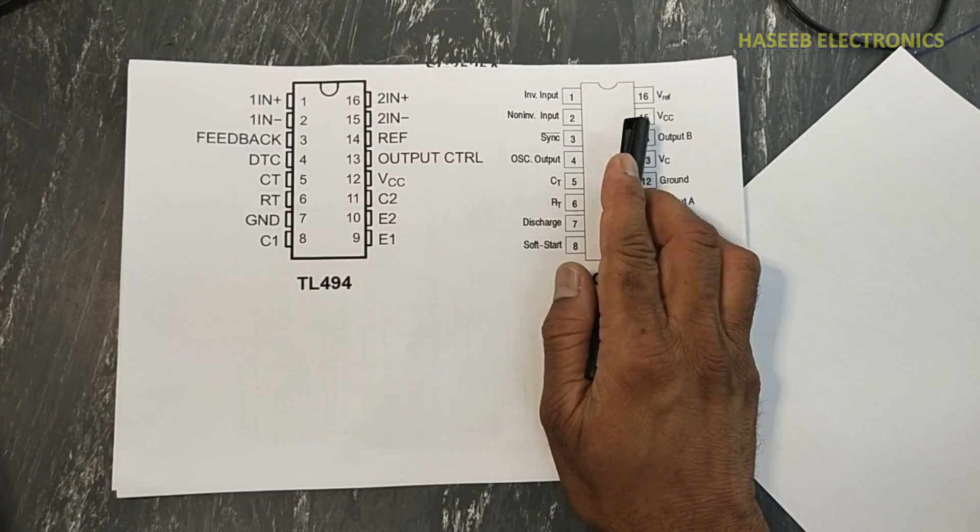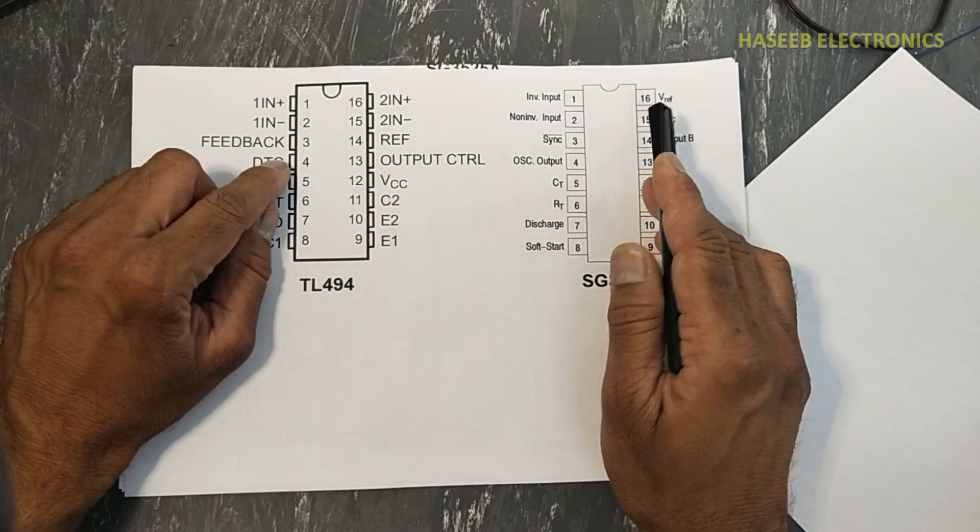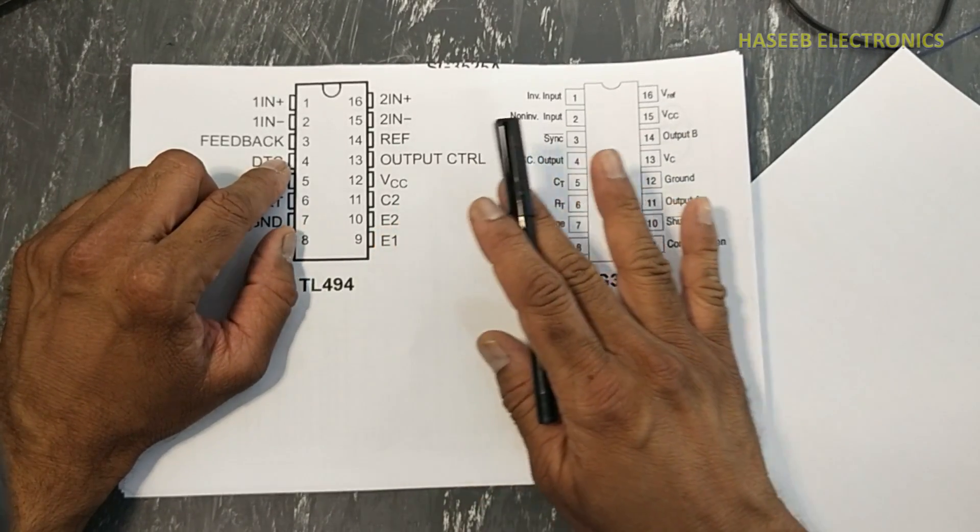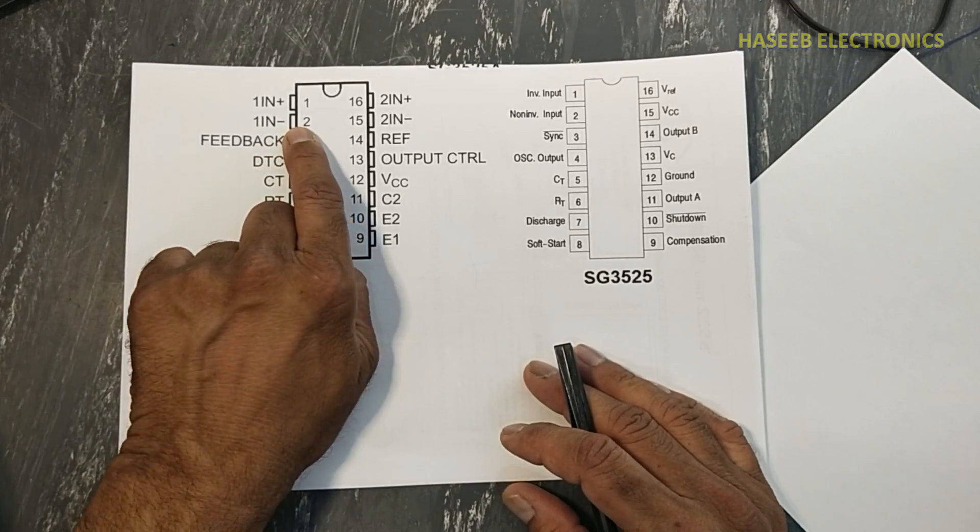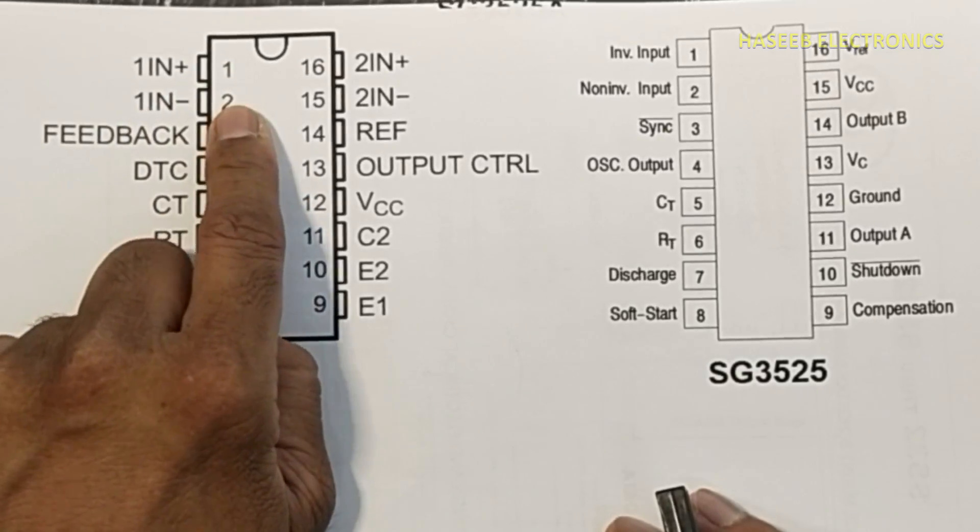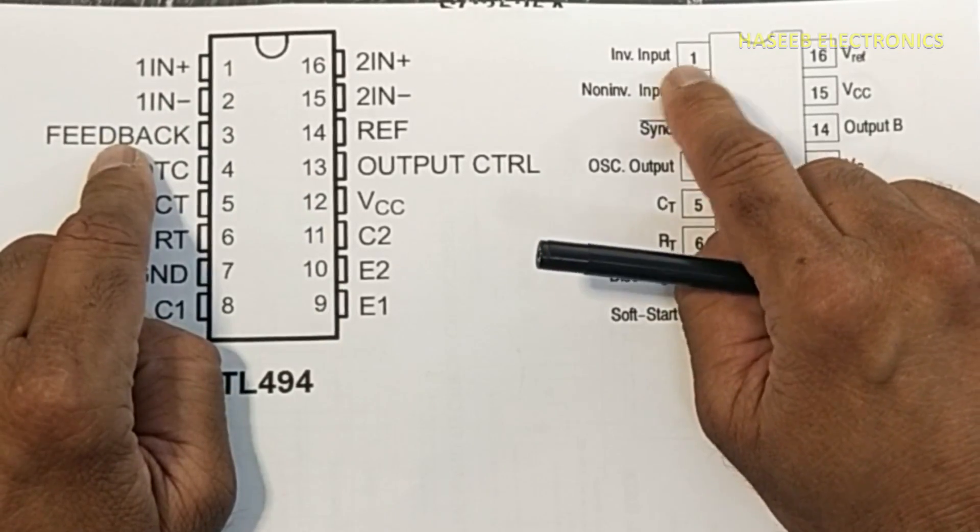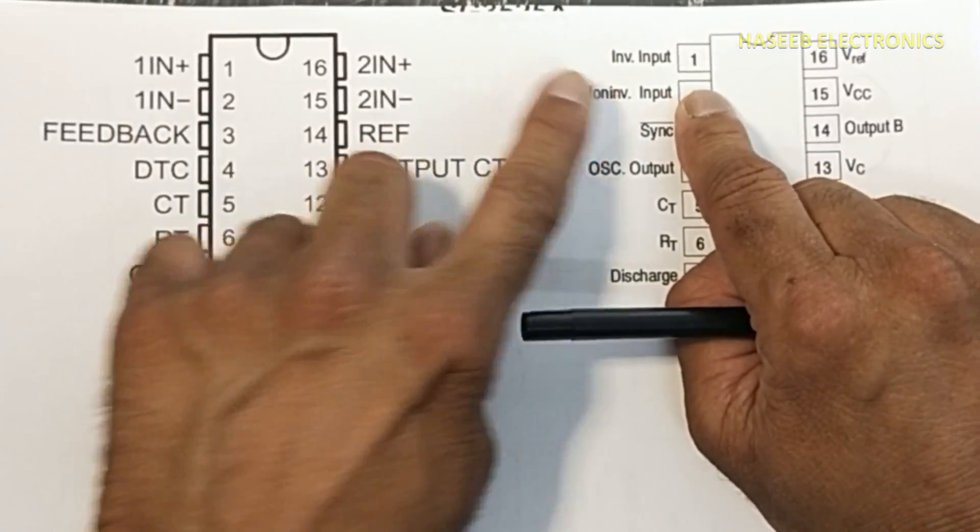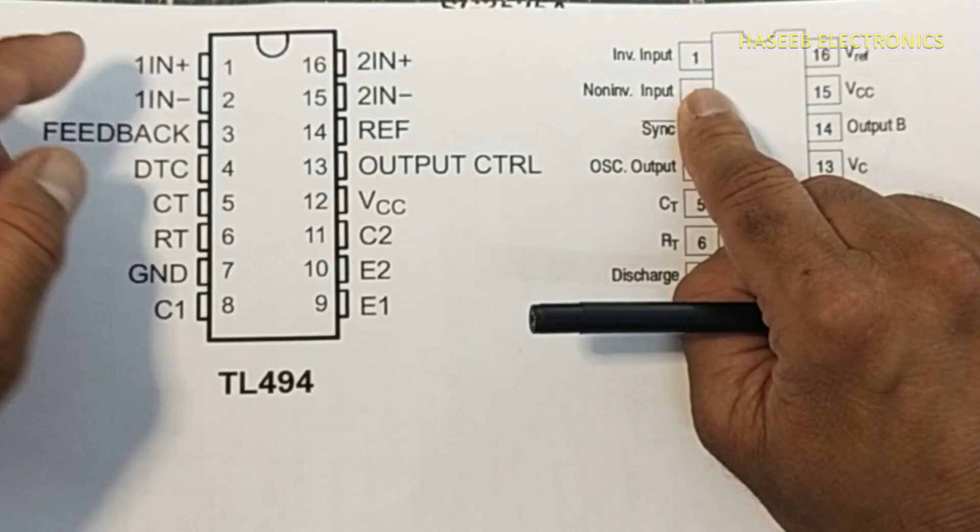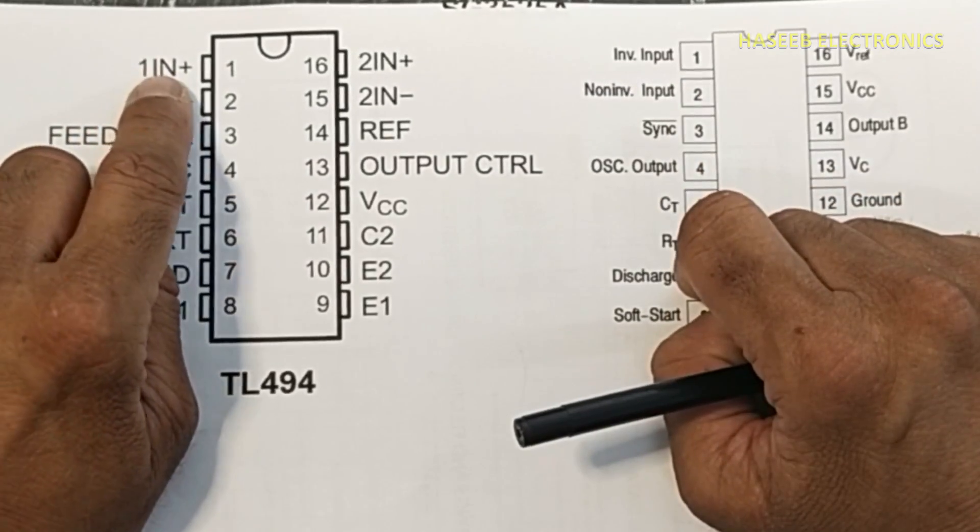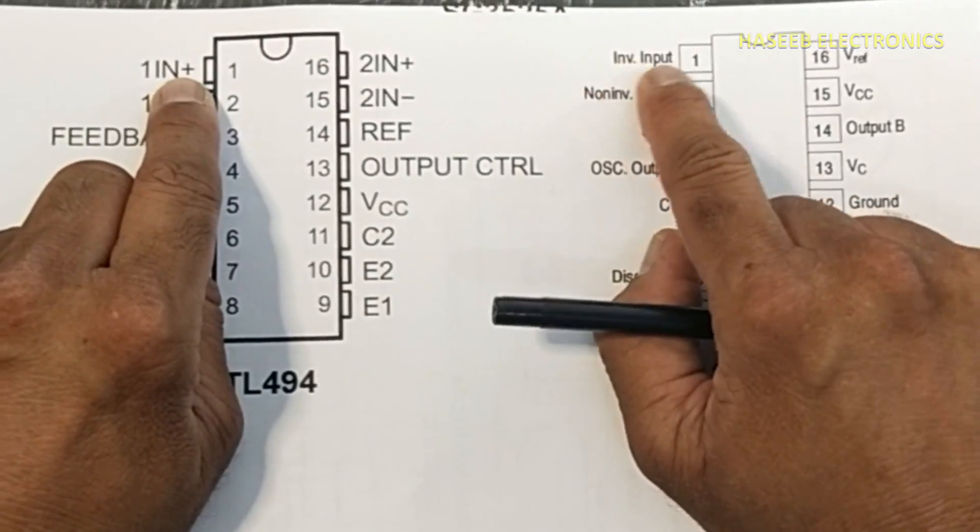Both ICs are 16 pin, but pin function is totally different. Here pin number one, pin number two are non-inverting and inverting inputs. If you see here, here is inverting and non-inverting. Both pins are opposite. Here this one is non-inverting, that is positive, but here is inverting.